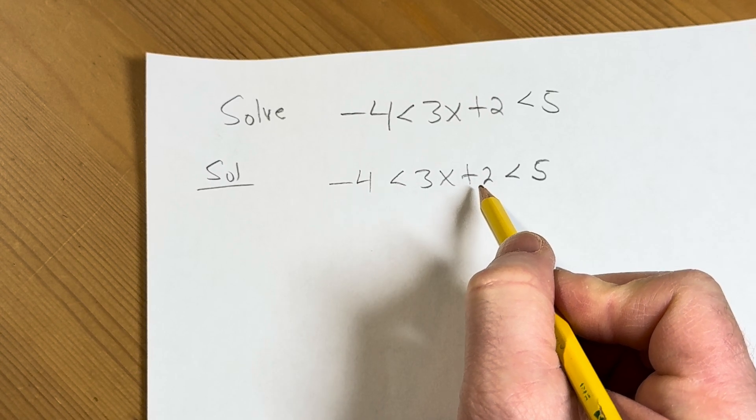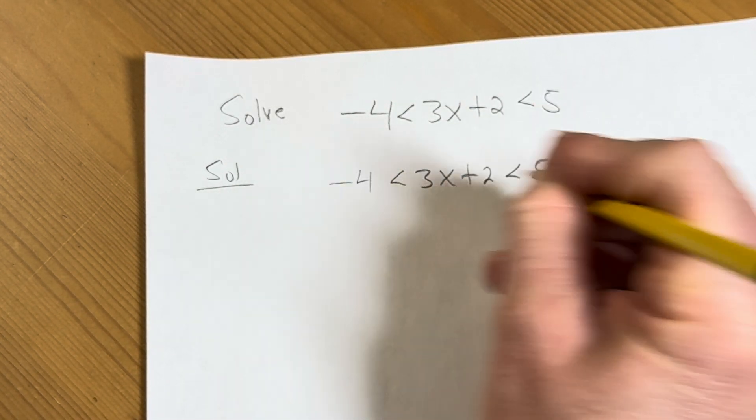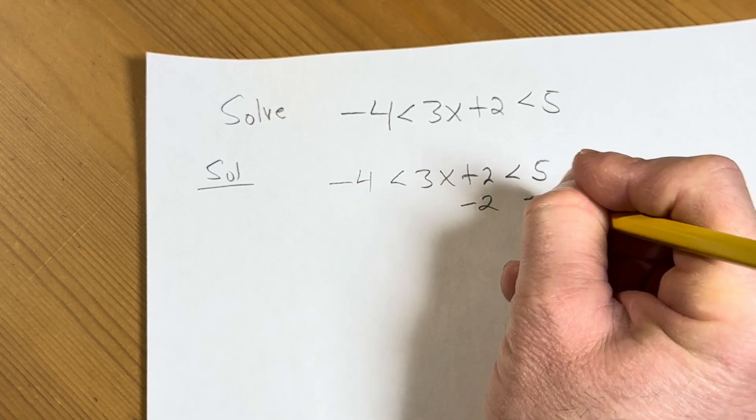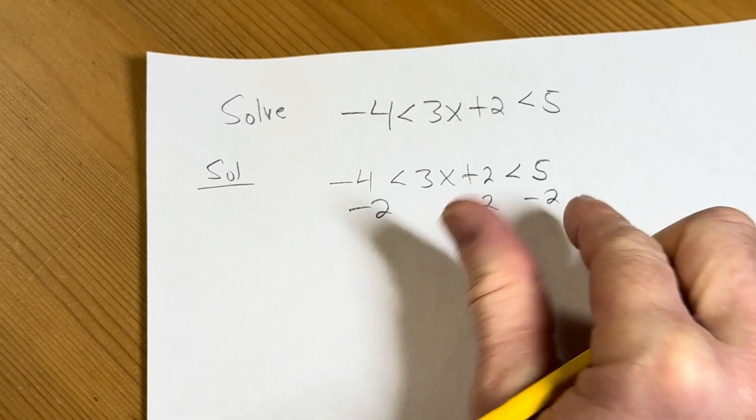So you've got this plus 2, so you can start by getting rid of that by subtracting 2 from all three sides. So minus 2, minus 2, minus 2. This is what's called a compound inequality, by the way.